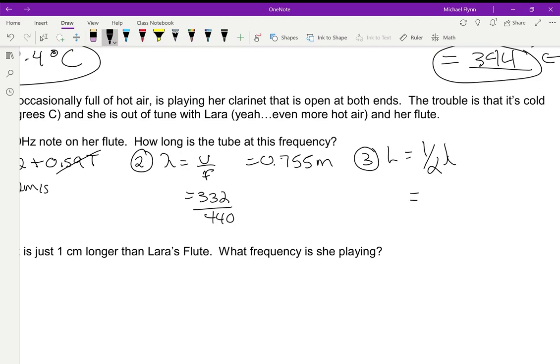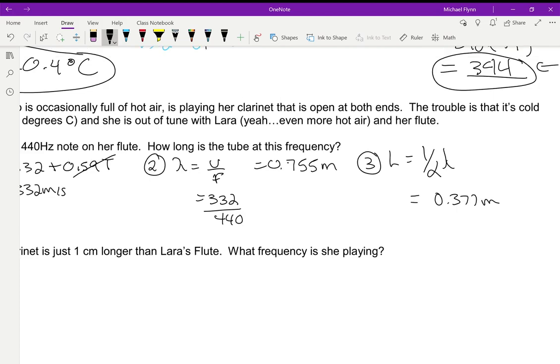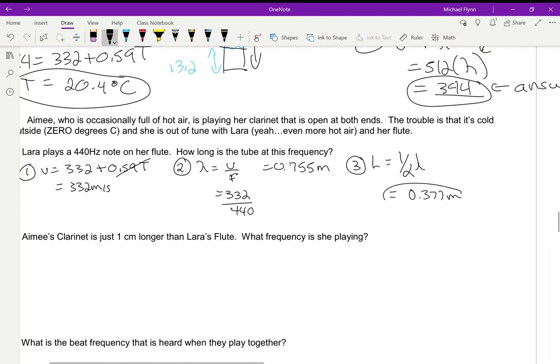So I'm going to take this number and divide it by two, and I get 0.377 meters. So 0.377 meters, that's how long the tube is. There's your answer - it's 37 centimeters long, which is a little bit longer than a small ruler.